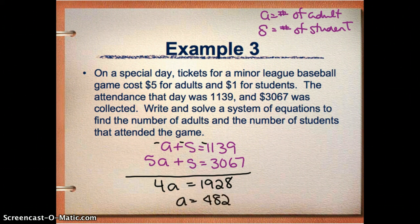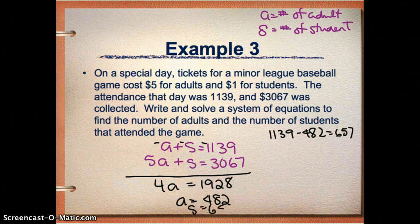So I think that there's 482 adults that go. And since adults plus students must equal 1139, I'm going to do 1139 minus 482 to figure out my students. And it looks like we should have 657 students. So S equals 657.